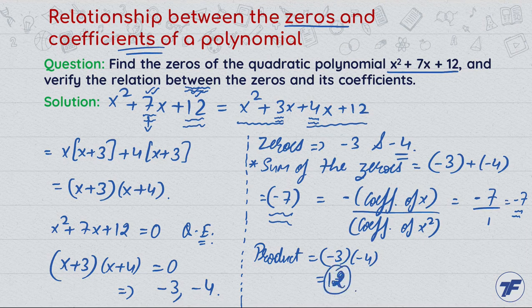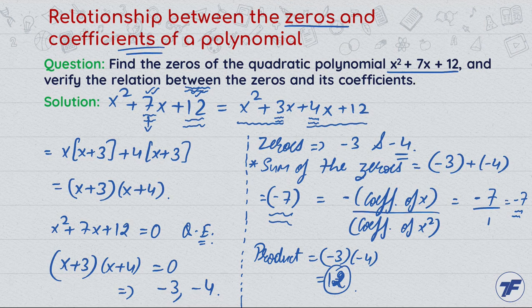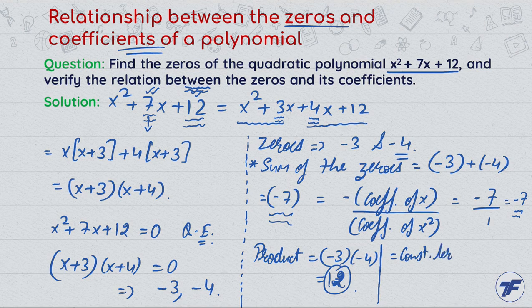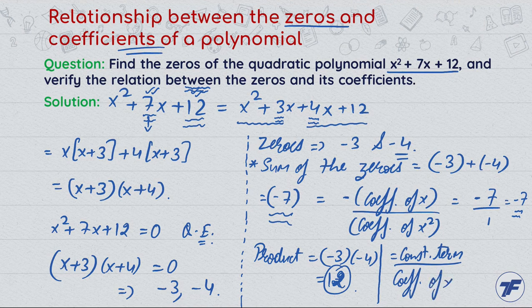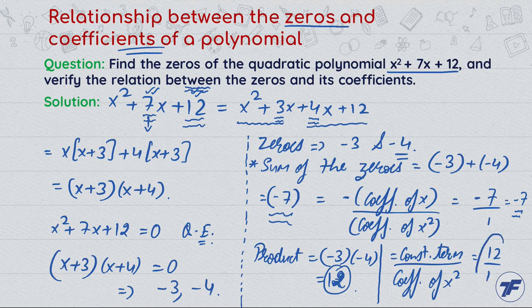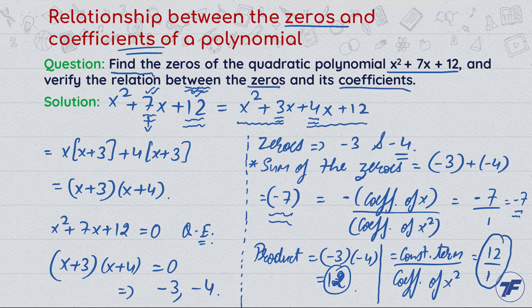Constant term divided by the coefficient of x². Constant term is 12, x² coefficient is 1. This value also simplifies to 12. So that means we have verified the relation between the zeros and its coefficients.